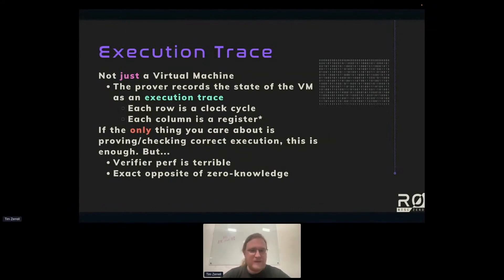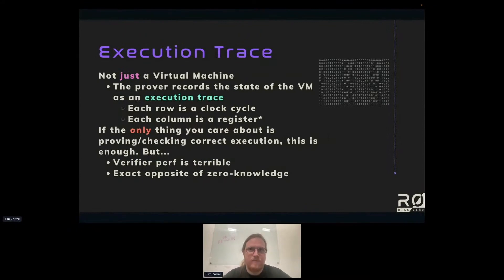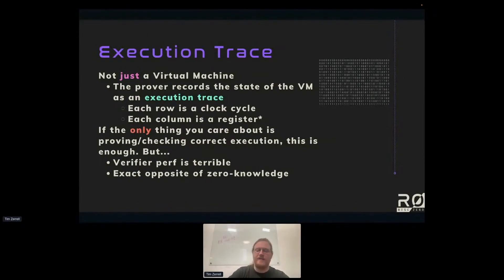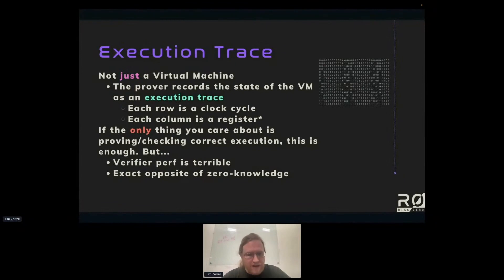The execution trace is a giant table where each row is a clock cycle. Every single cycle, the prover knows the state captured in the columns — every register is a column. To simplify: every row is a clock cycle, every column is a register, so you know the exact state of the RISC-V circuit at every single clock cycle for program execution.